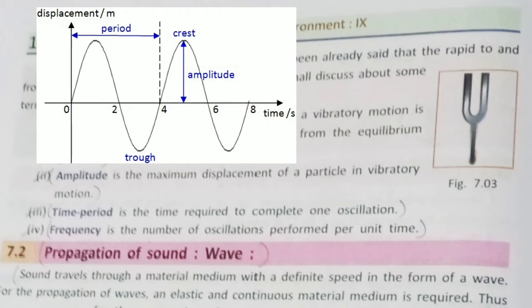Time period is the time required to complete one oscillation. One oscillation means a vibratory particle moves from one point and returns to that same point — that constitutes one oscillation. The time required to complete one oscillation is called the time period. Frequency is the number of oscillations per unit time.